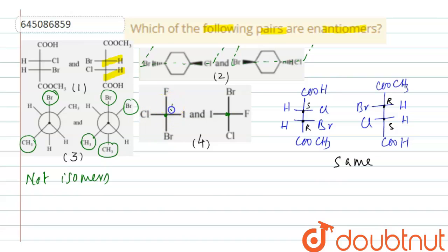Then this is R because clockwise. And here it is coming bromine—sorry, iodine, bromine, chlorine. This is coming R. F is on the right side, therefore it is S. Therefore, R and S.